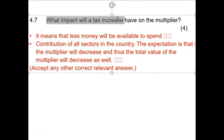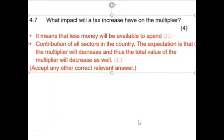What impact will a tax increase have on the multiplier? In short, if the government increases my tax I have less money to spend. Less spending means the multiplier will shrink — decrease. Less money will be available to spend. The multiplier will decrease because I have less money that I can circulate in the economy.